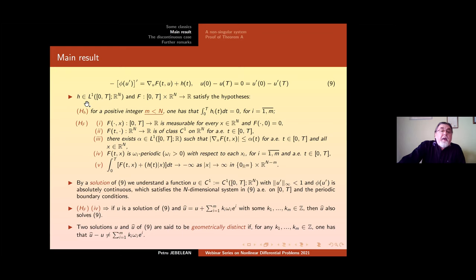This problem 9 where H in L^1 and capital F satisfy the following hypothesis. First on H, the hypothesis is for a positive integer m less than N, one has that these components have null mean. Namely, and secondly, capital F, the potential satisfies 1 and 2 means that actually the capital F is a Carathéodory function, which is C^1 with respect to the second variable. And also, we assume that F(·,0) = 0.